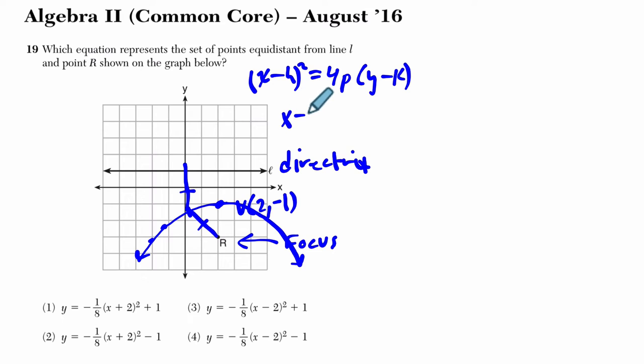We have (x - 2)² where h is the x value of our vertex. p is the distance from the vertex to the focus. So in this case p is 2, 4 times 2 is 8, times (y + 1), because we're subtracting a negative 1, that's just plus 1.